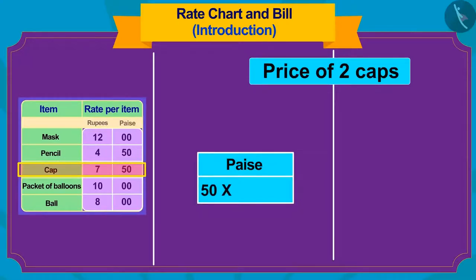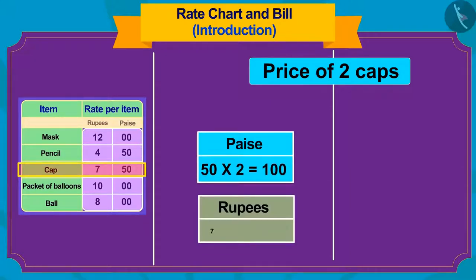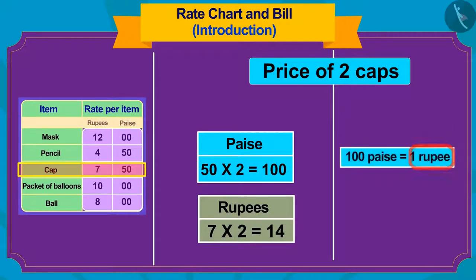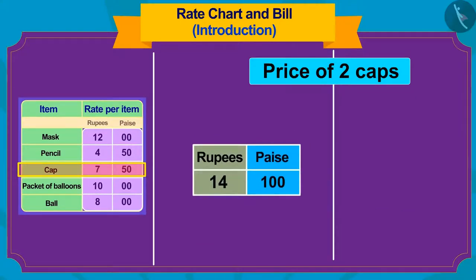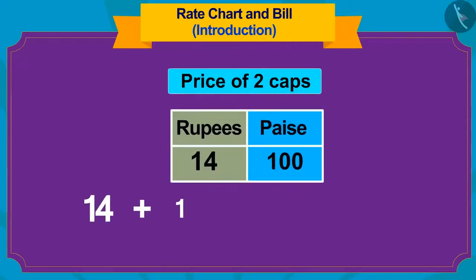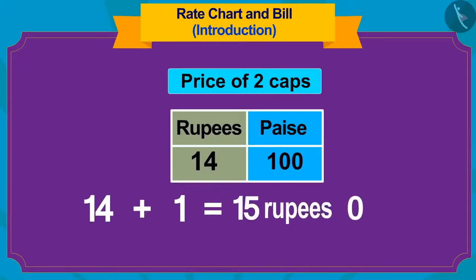First, we multiply the paise. Multiply 50 by 2, which makes 100 paise. Now we will multiply the number 7 written in rupees by 2, which makes 14 rupees. But how much rupees is 100 paise? 1 rupee. If we add the numbers of rupees and paise, then the value of two caps would be 14 plus 1 or 15 rupees, 0 paise.